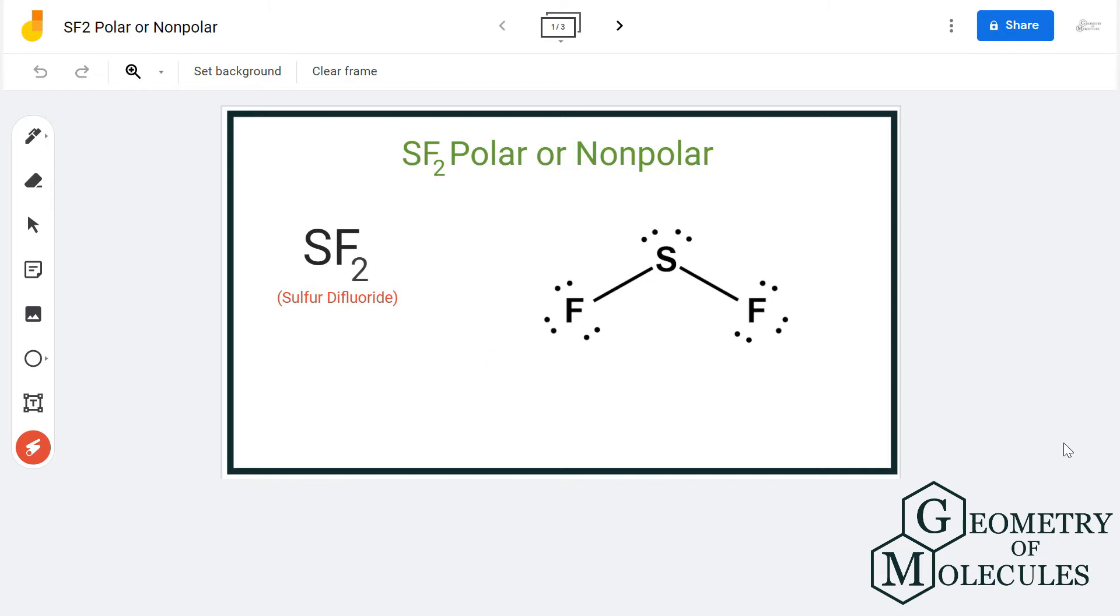So when you look at its Lewis structure, you can see that sulfur atom is forming a single bond with both the fluorine atoms and there are two lone pairs of electrons on this atom.